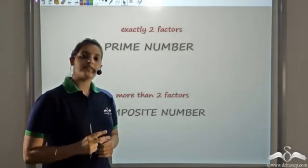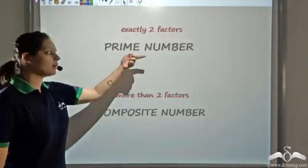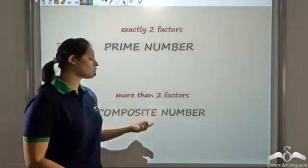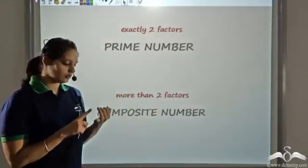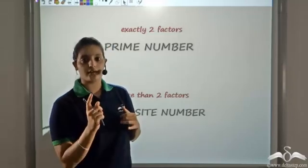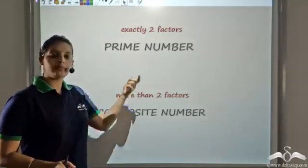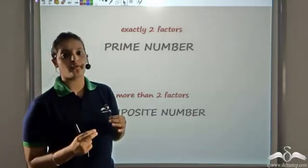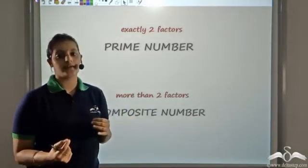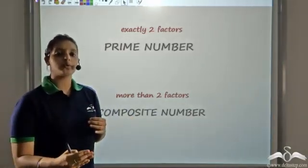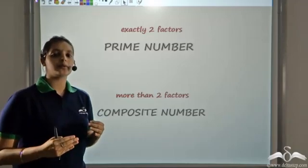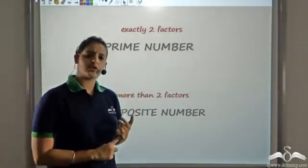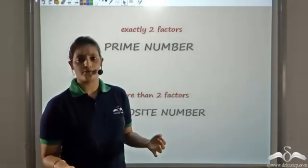We know that if numbers have exactly two factors then they are called prime numbers, and if a number has more than two factors then it is called a composite number. Except one, which has only one factor — so one is neither prime nor composite. From two onwards, all numbers have two factors for sure: one and the number itself. So from two onwards, a number is either prime or composite. The question is: how do we find whether a number is prime or composite?